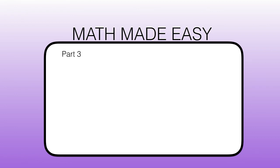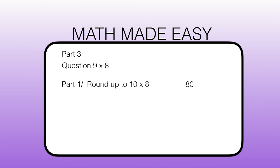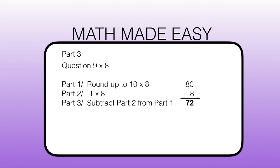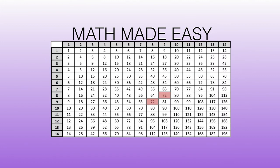Our original question was what is 9 times 8? In part 1 we rounded it up to 10 times 8, and the answer was 80. In part 2 we worked out the rounding up, which is 1 times 8, which is 8. In part 3 we are going to subtract part 2 from part 1: so 80 minus 8 equals 72. And that is the correct answer. We will check this in our multiplication table and we will see that 72 is the right answer.